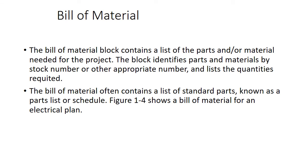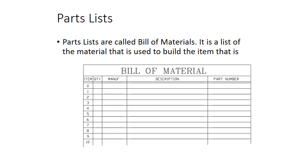Now we're going to talk about the bill of materials — another really important block on drawings. This is the recipe card: it tells you how many chocolate chips, how much flour, how much butter, how much vanilla. The bill of materials block contains a list of parts or materials needed for the project, identifying them by stock numbers or descriptions and listing the quantities required. It often contains a list of standard parts known as a parts list or schedule.